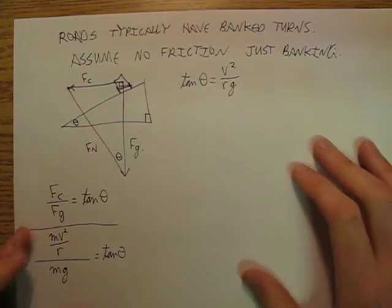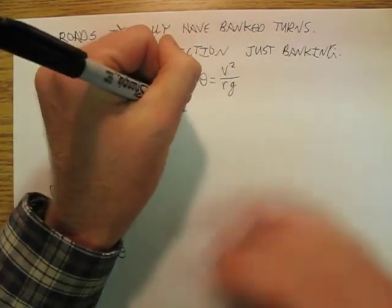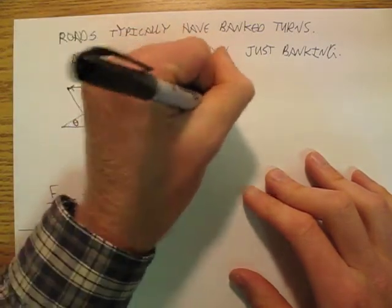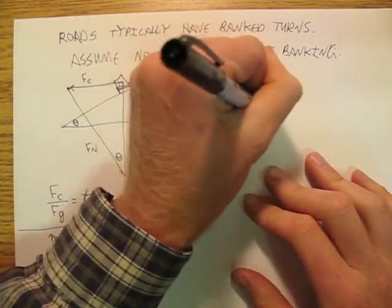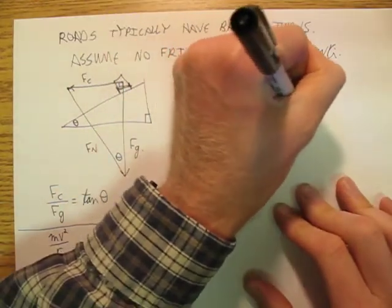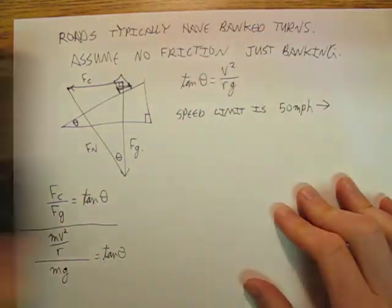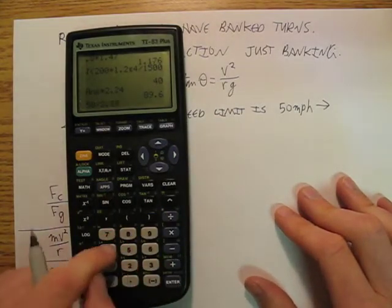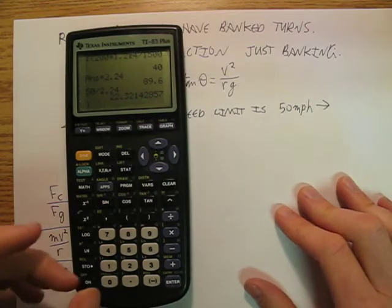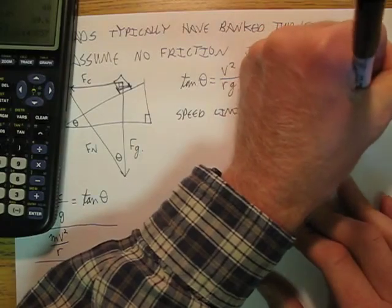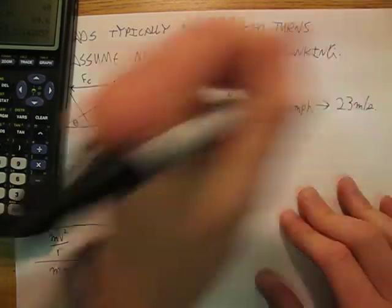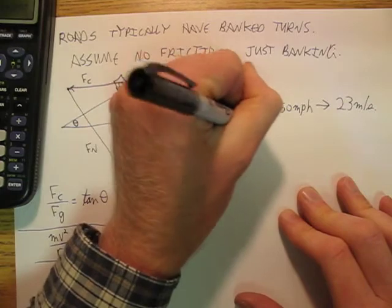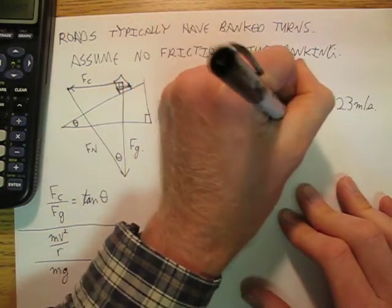So let's assume that we have a road, and speed limit is 50 miles per hour. And that translates into, figure it out on your calculator please, we'll round it up, 23 meters per second.